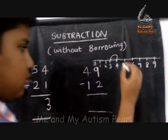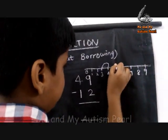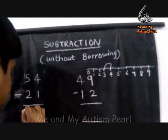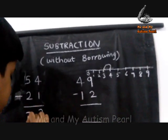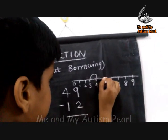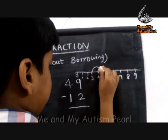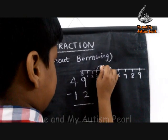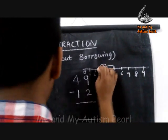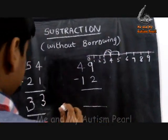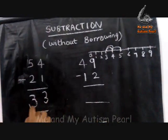Five minus two: count backward — one, two. So you get the answer three.